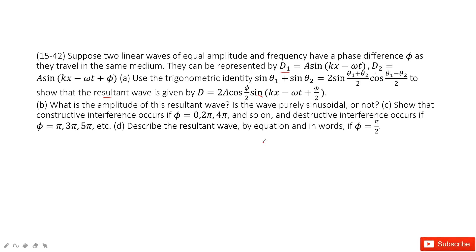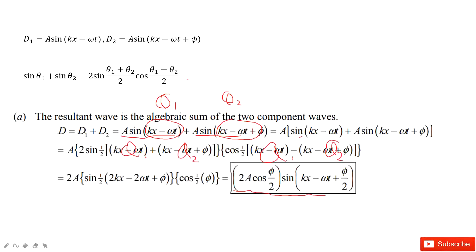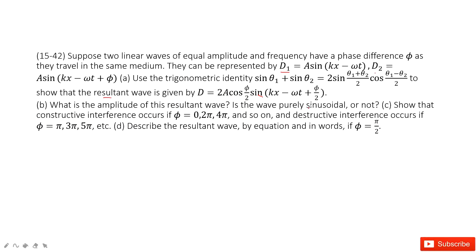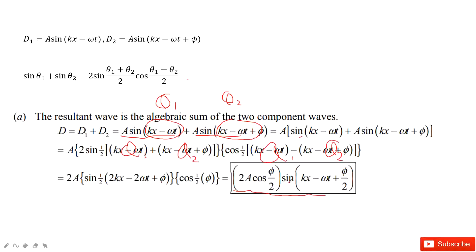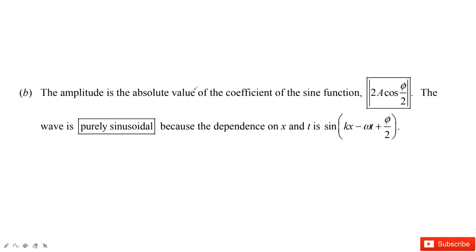The next one, we need to find the amplitude of this resultant wave. The amplitude of course is 2A cosine φ over 2. And is it a sine wave? Sure, of course. Because we have the term sine in this part. So the amplitude is this part and it's a pure sine wave.